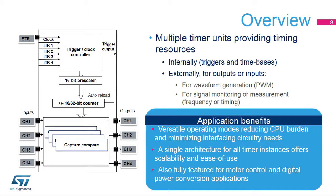This slide provides the block diagram of the medium-featured TIM-9 timer. The timer kernel consists of a 16-bit up-counter coupled with an auto-reload register to program the counting period. The two timer channels are controlled by two capture-compare registers. The counter is fed by the clock and trigger controller, also responsible for the timer chaining. Shown on the left are the input stage and the input conditioning circuitry, while on the right we have the output stage.